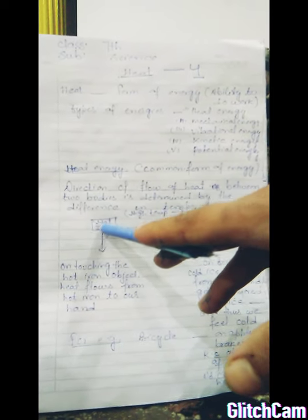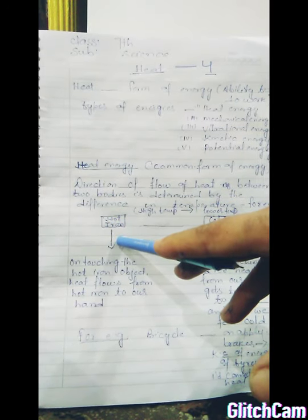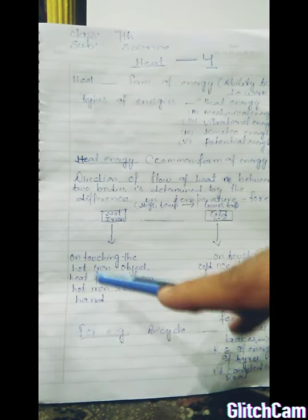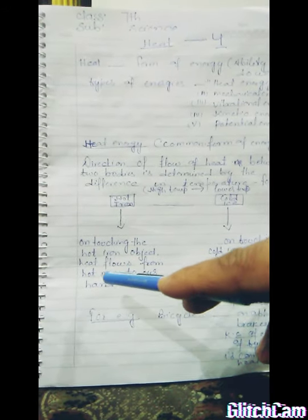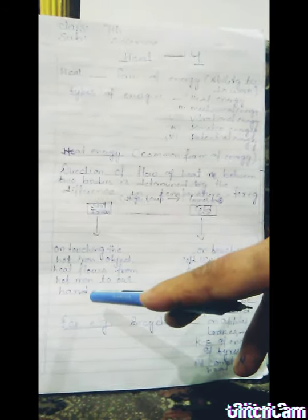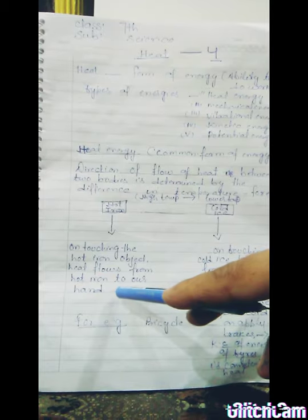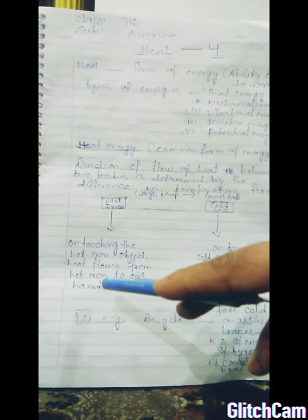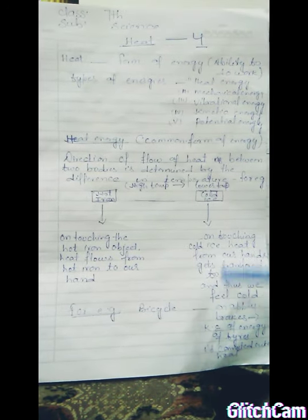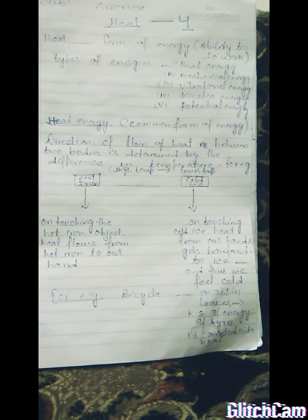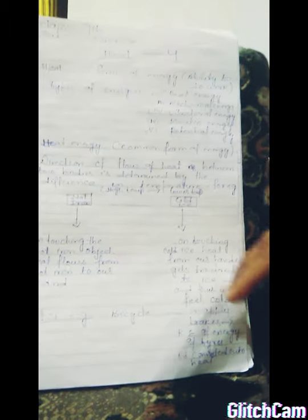For example, when we touch a hot iron or cold ice — on touching cold ice, heat flows from the iron to our hand. Heat gets transferred from the hot object to the cold one. Thus, the direction of flow of heat between two bodies is determined by the difference in temperature.